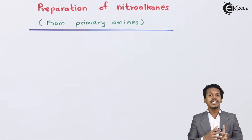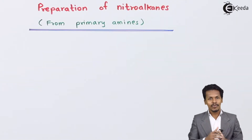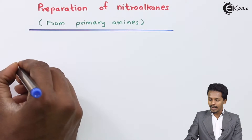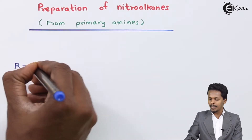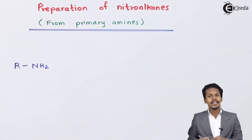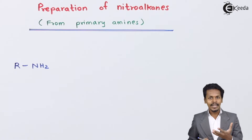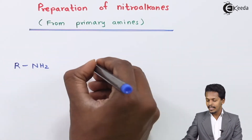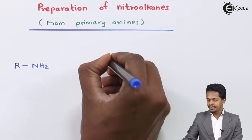We can easily convert a primary amine into nitroalkane by oxidation method. In this general reaction, suppose we are considering the primary amine R-NH2. The product we could get is nitroalkane, and we are using alkaline KMnO4 solution.